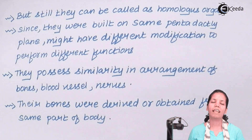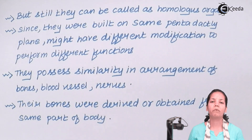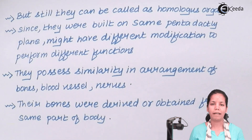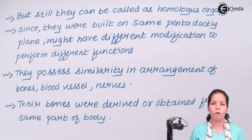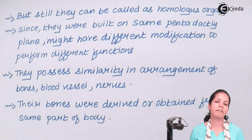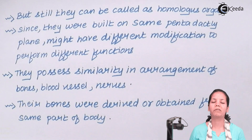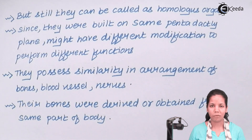So students, in this part of the chapter what we studied was about comparative anatomy and how comparative anatomy applies in the case of forelimbs in different vertebrates. I hope students we are all very clear with this concept. Thank you.